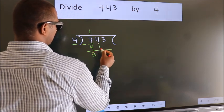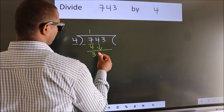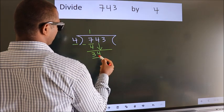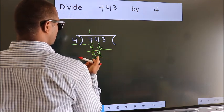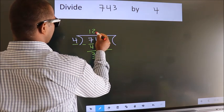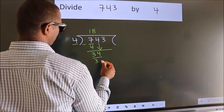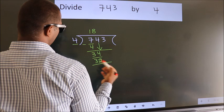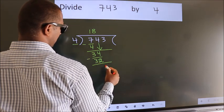After this, bring down the beside number, so 4 down, so 34. A number close to 34 in the 4 table is 4 8s, 32. Now we subtract, we get 2.